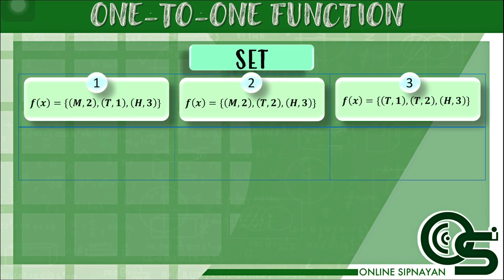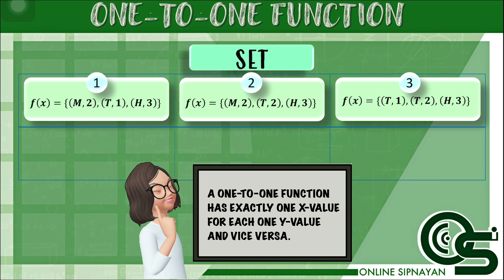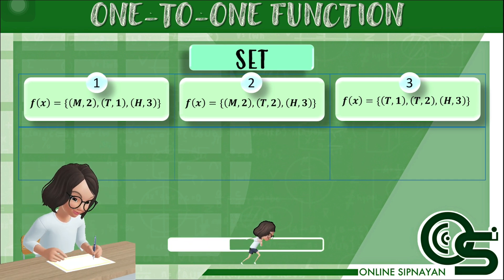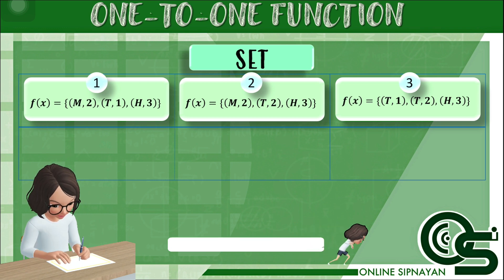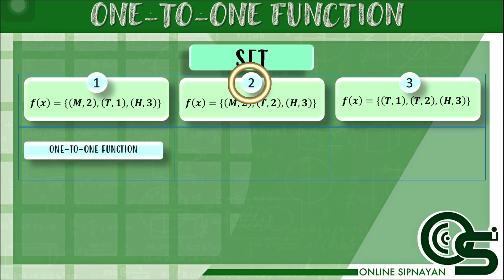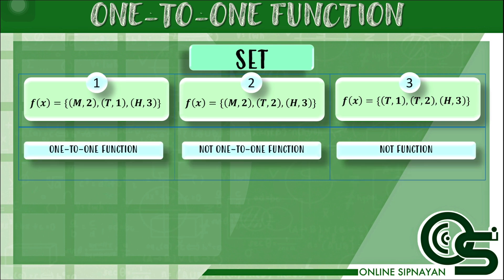Next, we are going to determine whether the following sets of ordered pairs are one-to-one functions. Remember that if the x value is paired with exactly one element in the y value, it means that it is a one-to-one function. For number 1, the set of ordered pairs is a function, and each x value is paired with exactly one element in the y value — it is a one-to-one function. For number 2, it is also a function; however, it is not one-to-one because 2 has two x values. For number 3, the relation is not a function because each y value has no exactly one x value, so it is also not a one-to-one function.